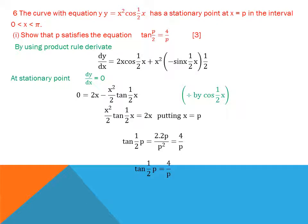Question 6: the curve y = x²·cos(½x) has a stationary point at x = p in the interval (0, π). Show that p satisfies tan(p/2) = 4/p. Differentiating using the product rule: dy/dx = 2x·cos(½x) + x²·(−sin(½x))·(½). At a stationary point dy/dx = 0.